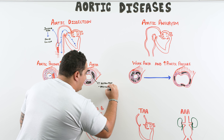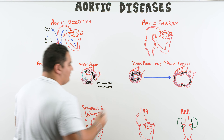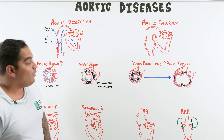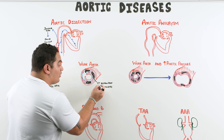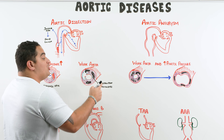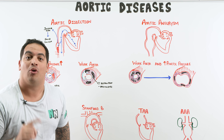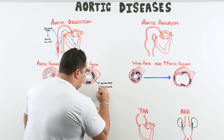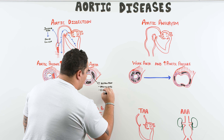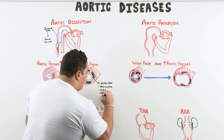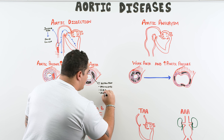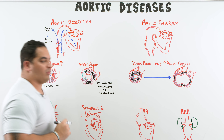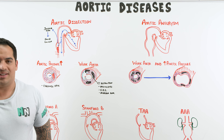Connective tissue destruction weakens the vessel wall. Diseases causing this include vasculitis — relatively rare, but examples include syphilis and Takayasu's arteritis. There are also rare mutations where proper connective tissue doesn't form, such as Ehlers-Danlos syndrome and Marfan syndrome.